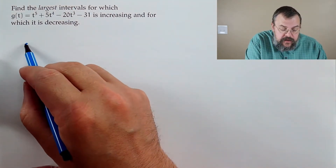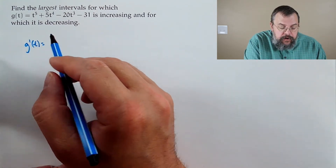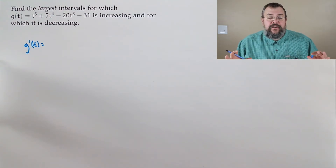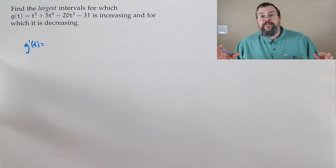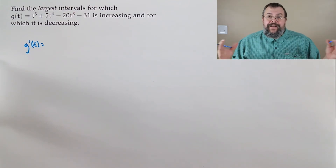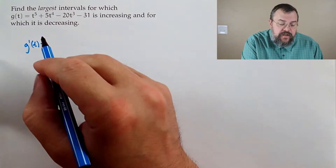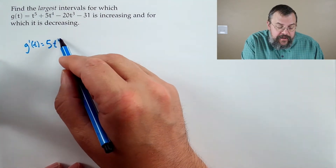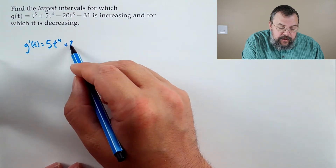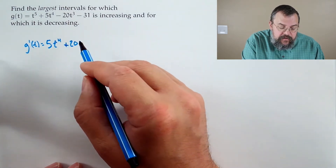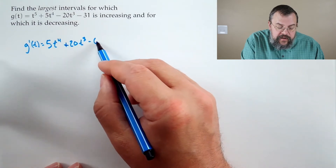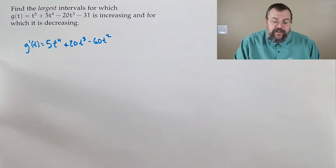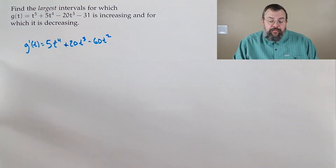There are no restrictions placed on our domain, so it's the largest possible domain — all real numbers. Polynomials are nice; you can plug anything into a polynomial. Our first derivative is 5t to the 4th plus 20t cubed minus 60t squared, because we're getting good at taking derivatives of polynomials.